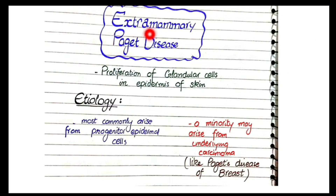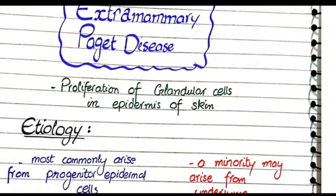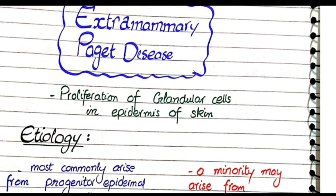In this video we will discuss the pathology of extramammary Paget's disease, or Paget's disease of the vulva. Paget's disease of the vulva is the proliferation of glandular cells in the epidermis of the skin. The epidermis is made of multiple layers of cells, and when glandular cells start proliferating within these layers, we call this Paget's disease of the vulva.